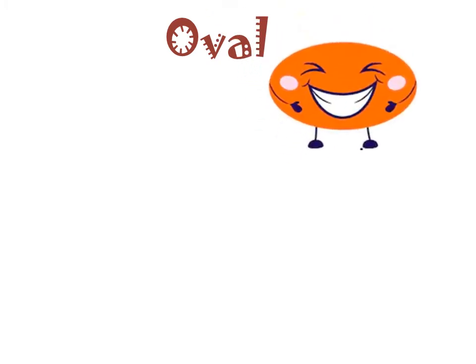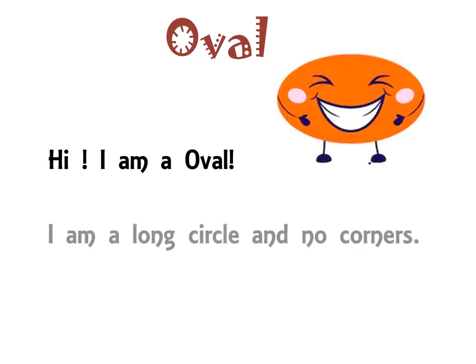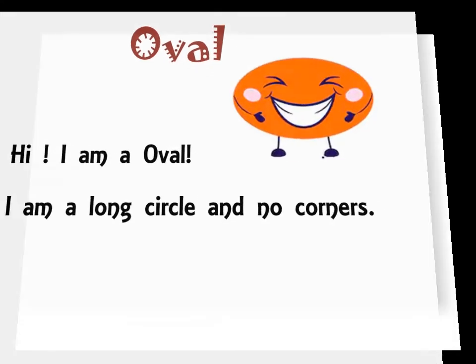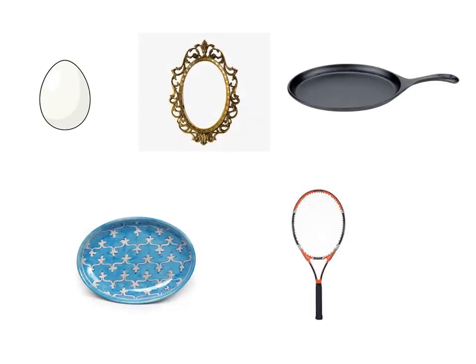Oval. Hi, I am an oval. I am a long circle with no corners. Let us see few objects that have a 2D shape of an oval. All these objects are in the shape of an oval.